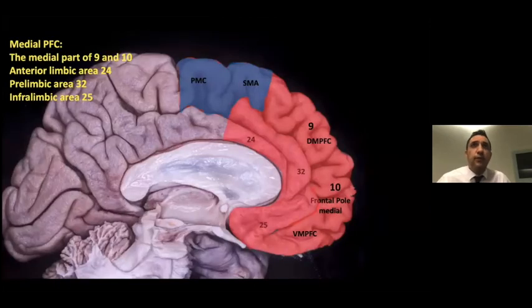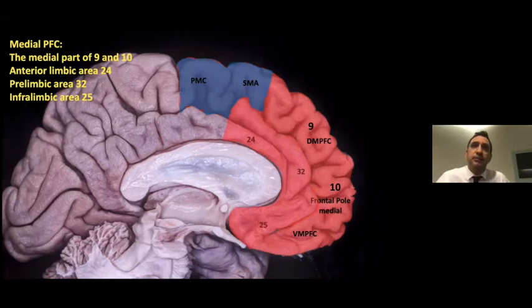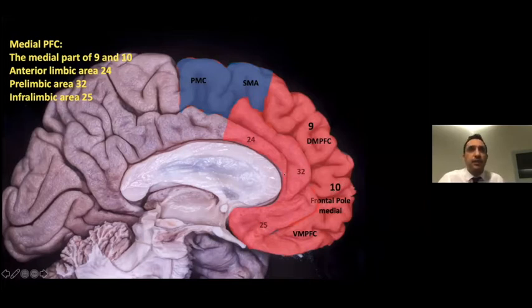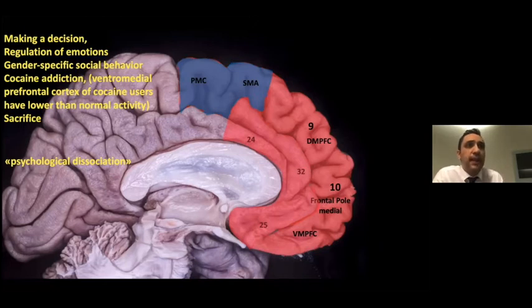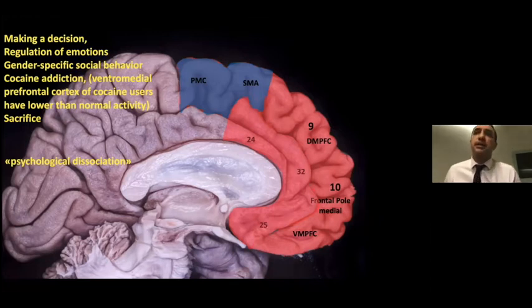The medial prefrontal cortex includes the medial part of Brodmann areas 9 and 10, the prelimbic area, and the infralimbic area. It may lead to decision making, regulation of emotions, and gender-specific social behavior. The ventromedial prefrontal cortex has been found to show lower than normal activity in cocaine users and has been shown to be unusually inactive in people with psychological disorders.